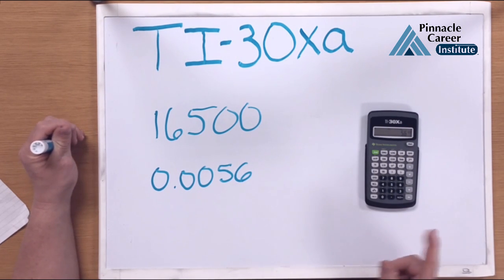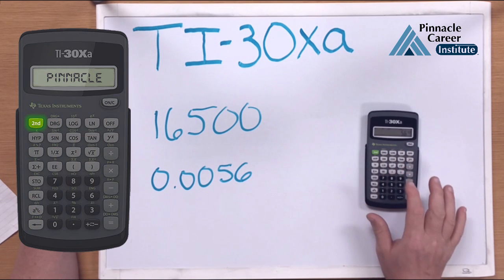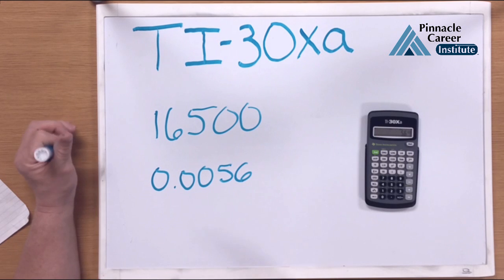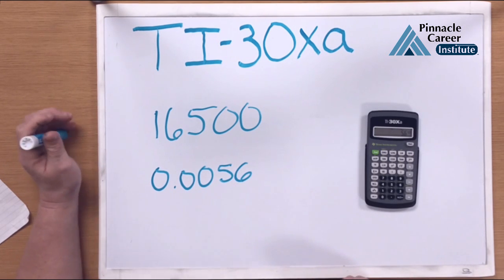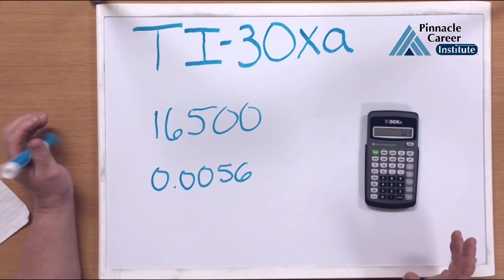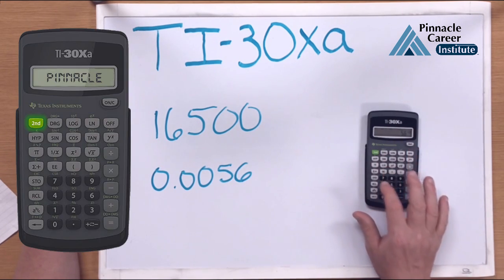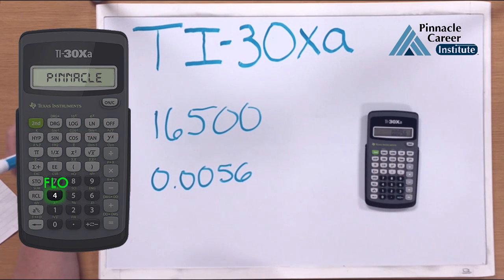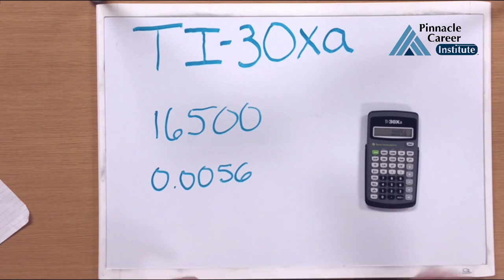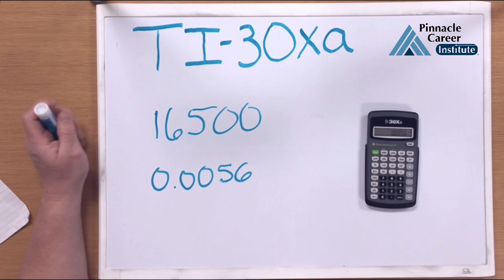For engineering notation, hit the second and the 6, and that will convert it. In this case, engineering and scientific are the same: 5.6 times 10 to the minus third. If you need to convert it back to a regular number, hit second and 4 and now you're back to 0.0056. You're going to have a lot of homework problems where you have to make these conversions. Learn the rules and do it yourself, but use the calculator to verify you did it right. As you do that, you're going to get better and better at converting your numbers.